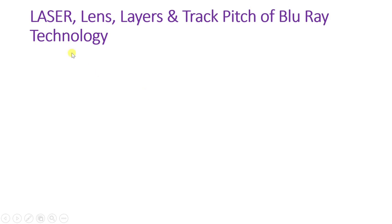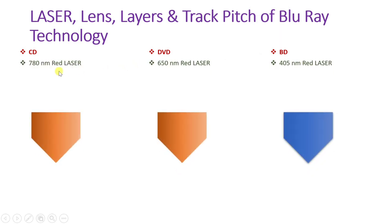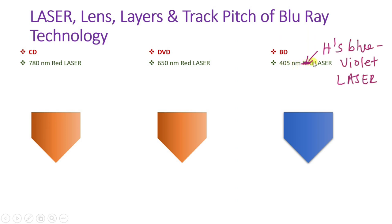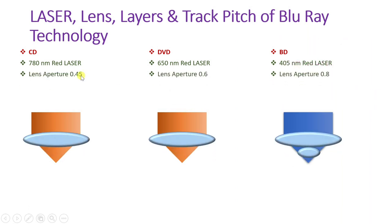Let us compare CD, DVD, and Blu-ray disc with respect to laser, lens, layers, and track pitch. The laser wavelength in a CD is around 780 nanometers, in a DVD it is 650 nanometers with red color, and in a Blu-ray disc it is 405 nanometers with blue-to-violet color. Lens aperture also increases progressively: 0.45 for CD, 0.6 for DVD, and 0.8 for Blu-ray disc.